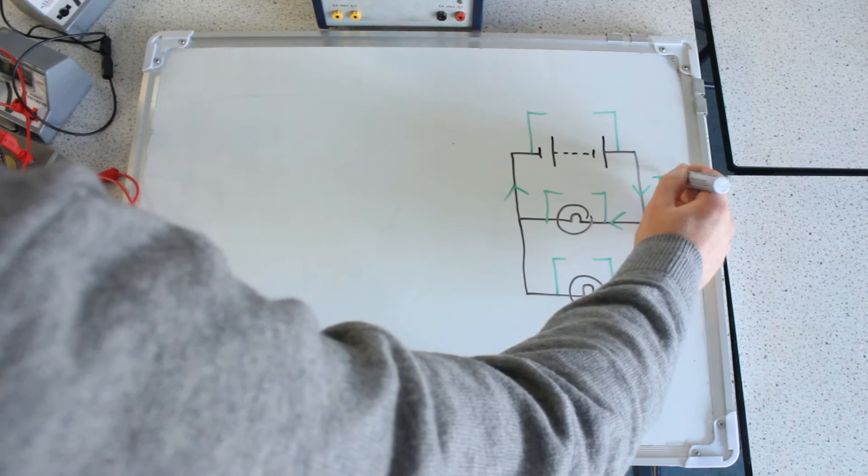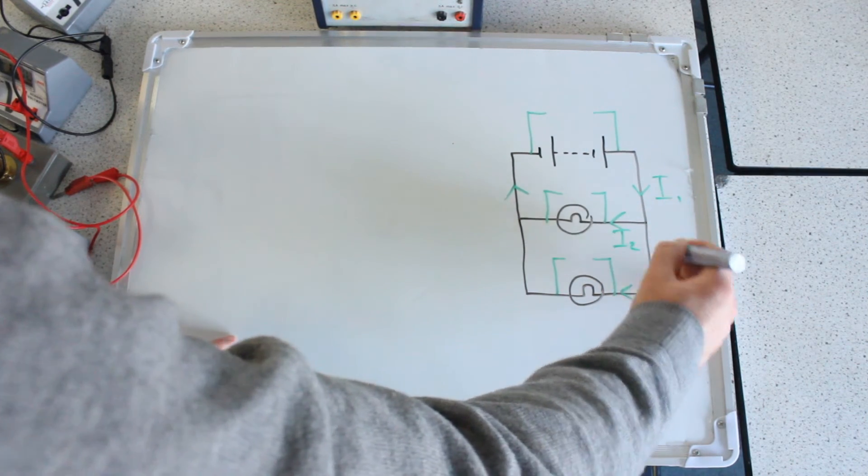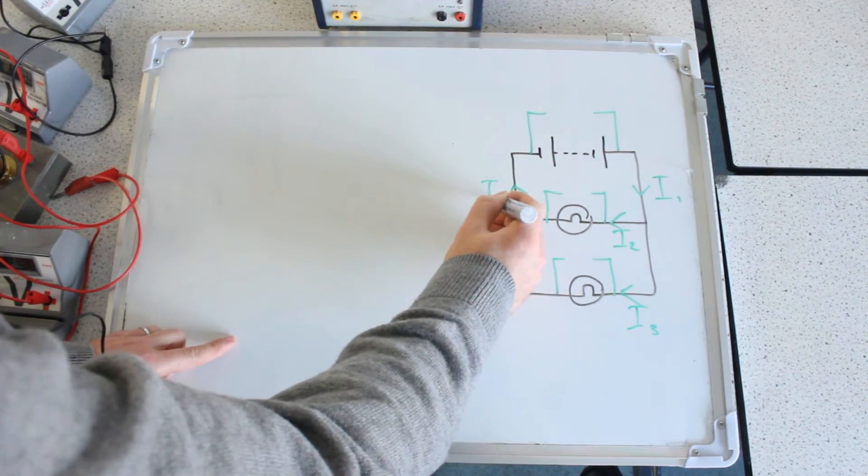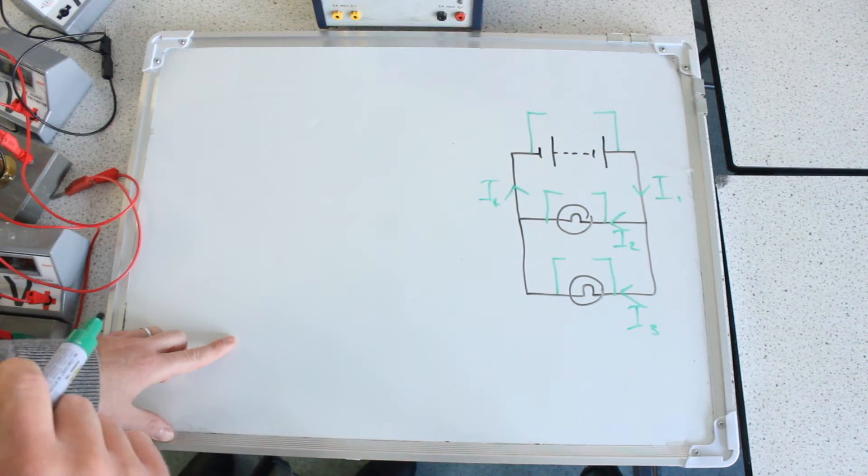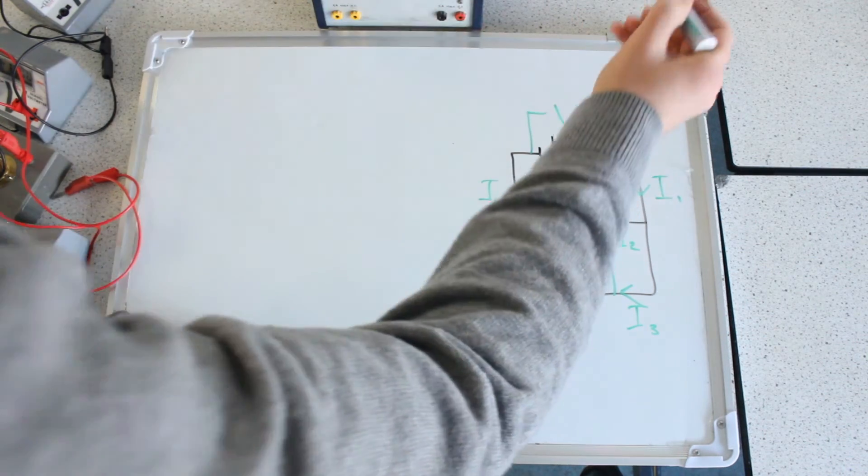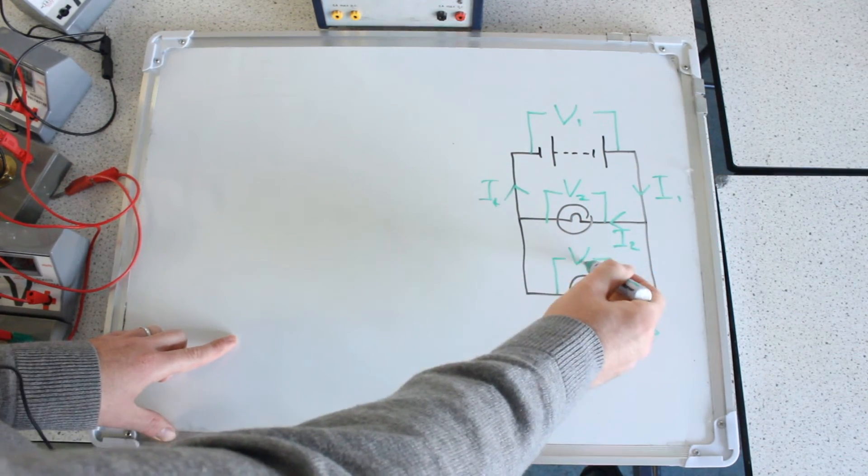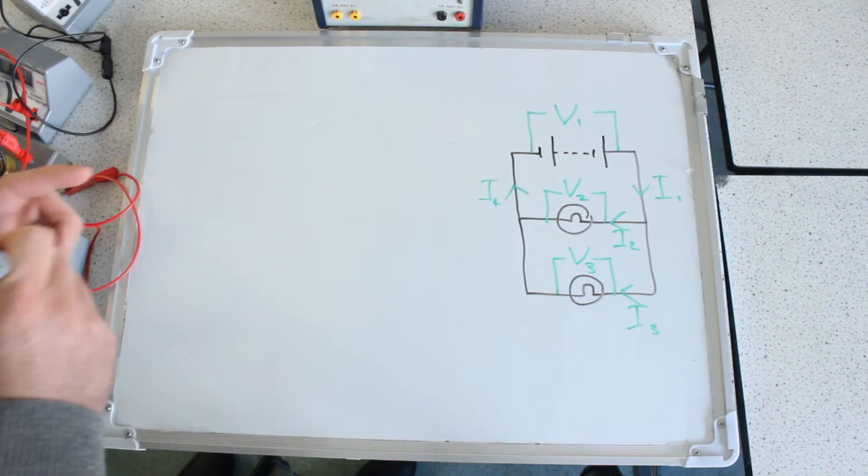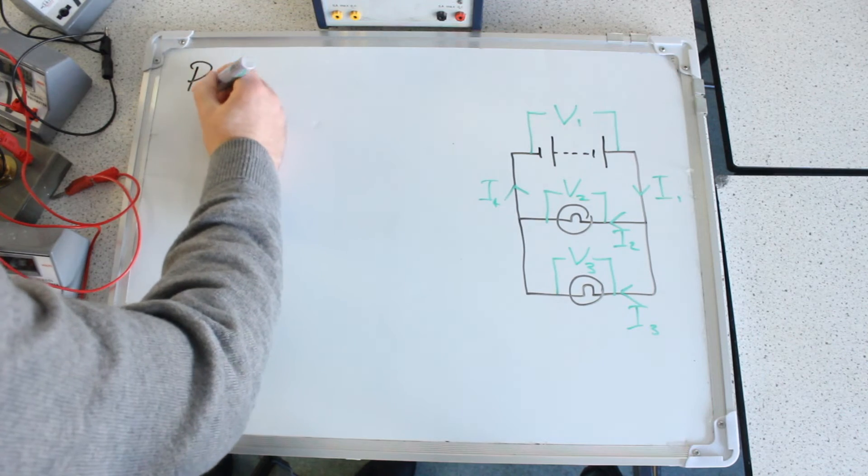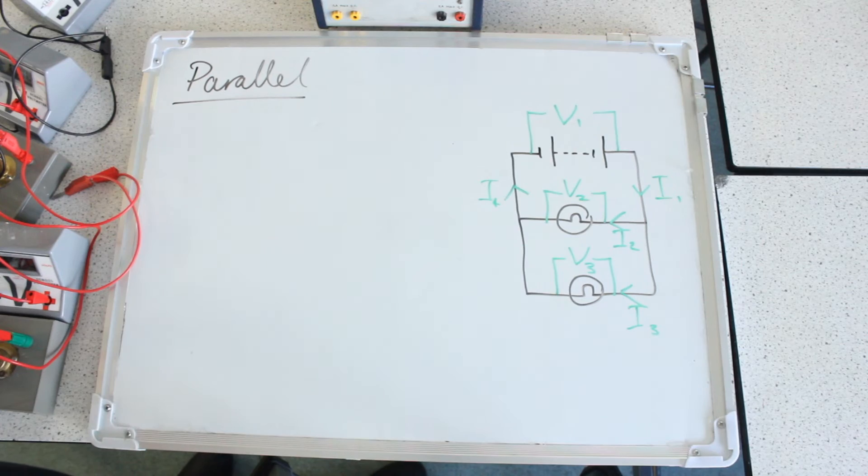So firstly, we measured the current here. We're going to call that I1, then I2 in this first branch, I3 in the second branch, and then I4 back again to the power pack in the other side of the circuit. And the voltage across the supply we're going to call V1, the voltage across the first bulb V2, and V3 the voltage across this second bulb. And we're going to write three simple rules for how you combine currents and voltages in parallel.